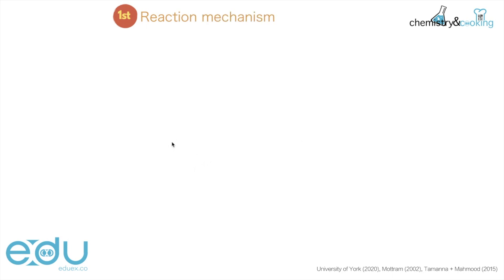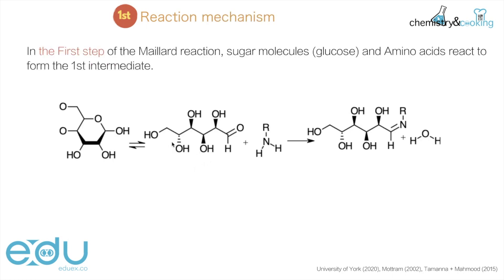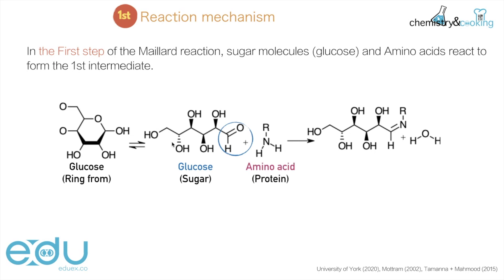The first thing we are going to look at is the reaction mechanism, just as a reminder of the first step where the sugar molecules and amino acid react to form the first intermediate. We do have a number of different structures of glucose — we can either have a ring form, which is the more popular form, but it could also be an open structure, and that's the one we are looking at today. It's the aldehyde functional group that is going to react from the glucose, and then from the amino acid it is the nitrogen with the lone pair that is going to attack the carbon of the carbonyl group.